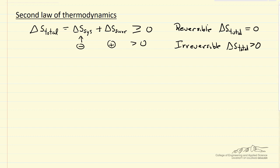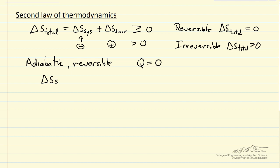If we look at some specific cases: for an adiabatic and reversible process, there's no heat transfer, Q is zero. Using our definition for the entropy of the system — DQ reversible over T — that equals zero. And there's no heat transfer to the surroundings either, so delta S for the surroundings is also zero.